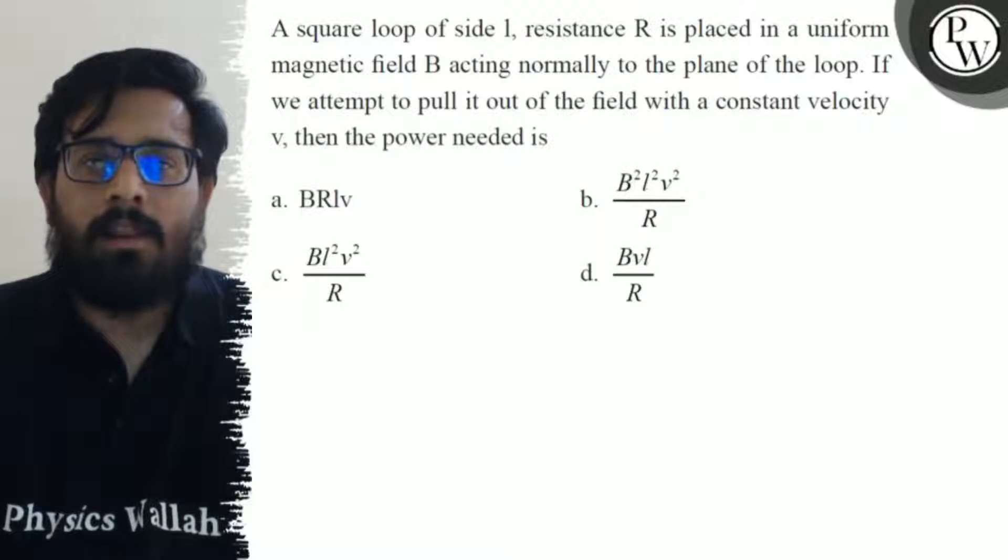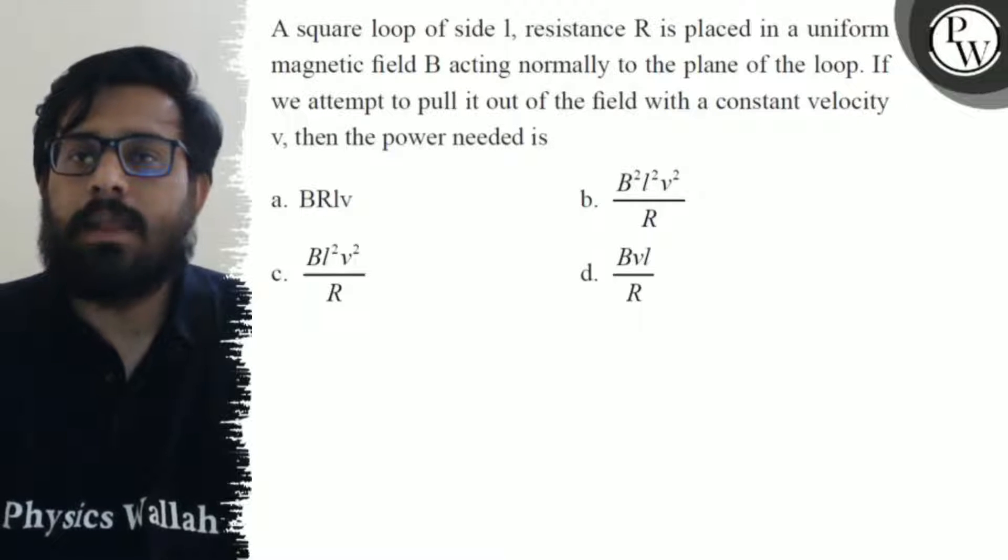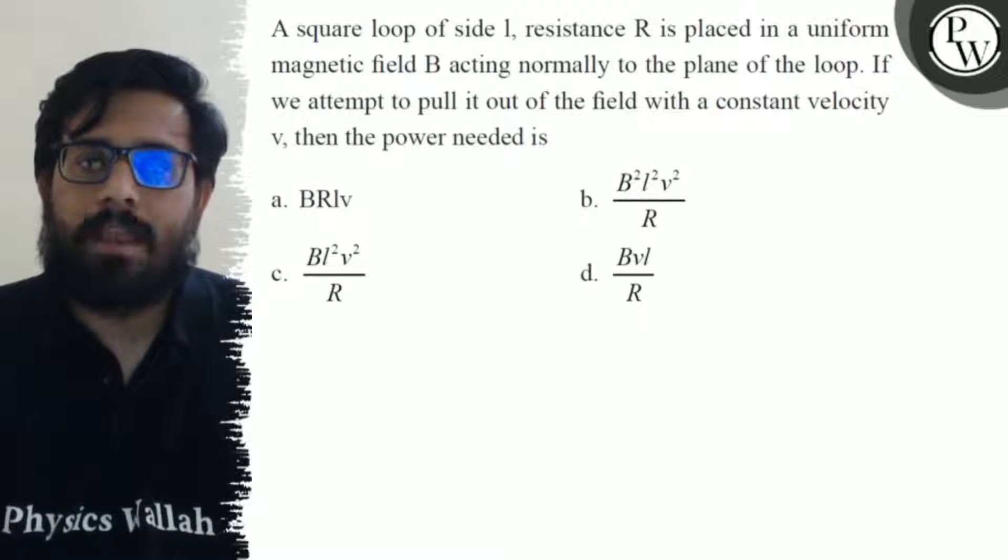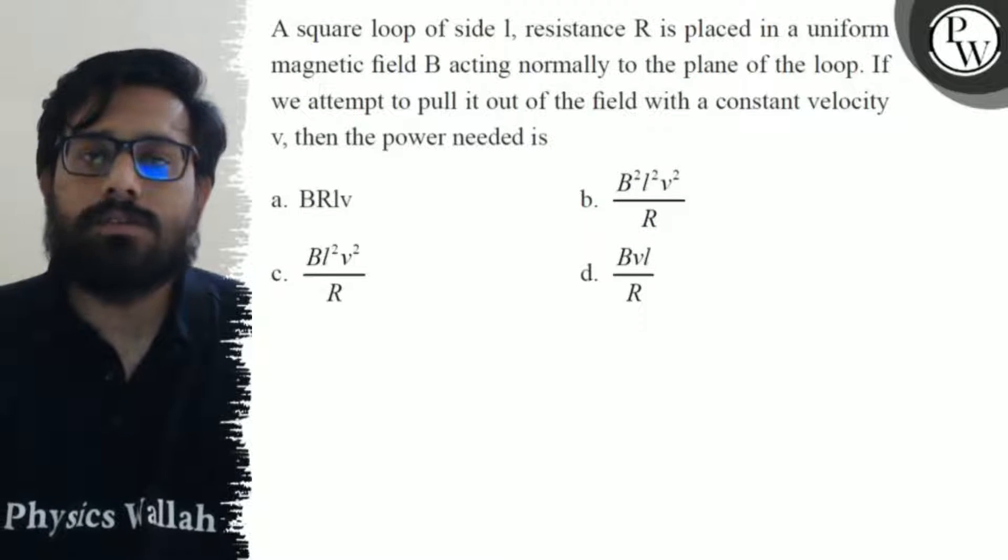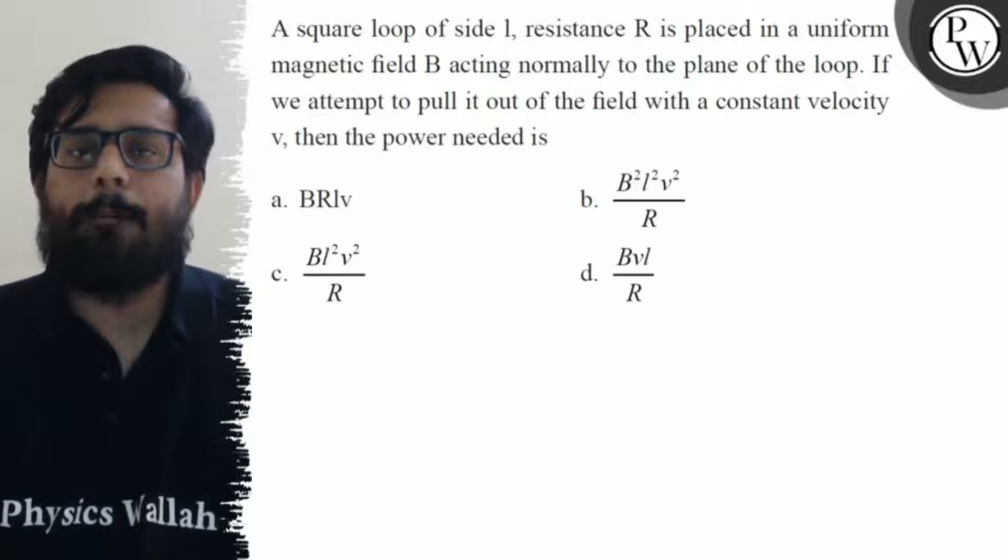A square loop of side L, resistance R, is placed in a uniform magnetic field B acting normally to the plane of the loop. If we attempt to pull it out of the field with a constant velocity V, then the power needed is: